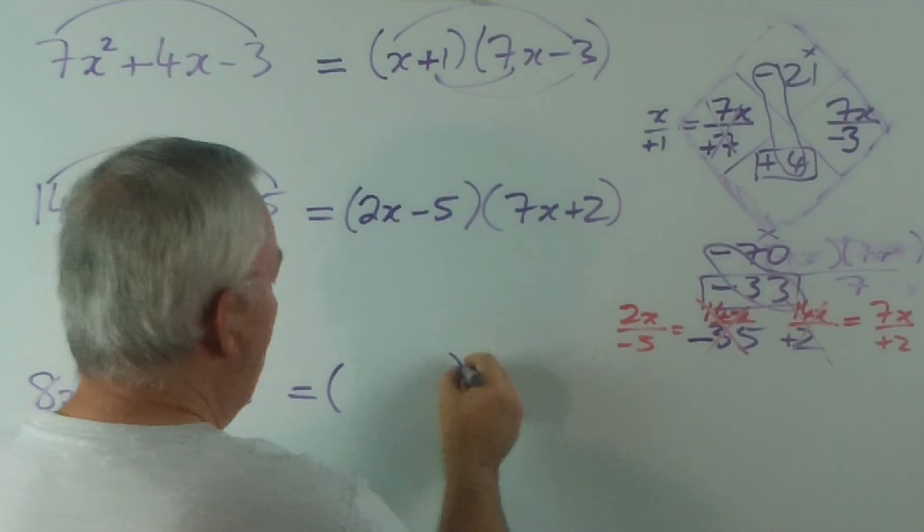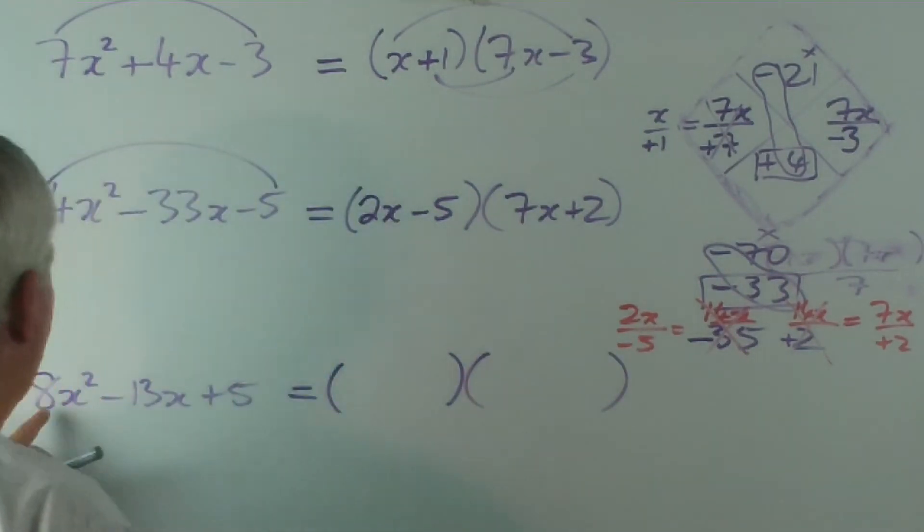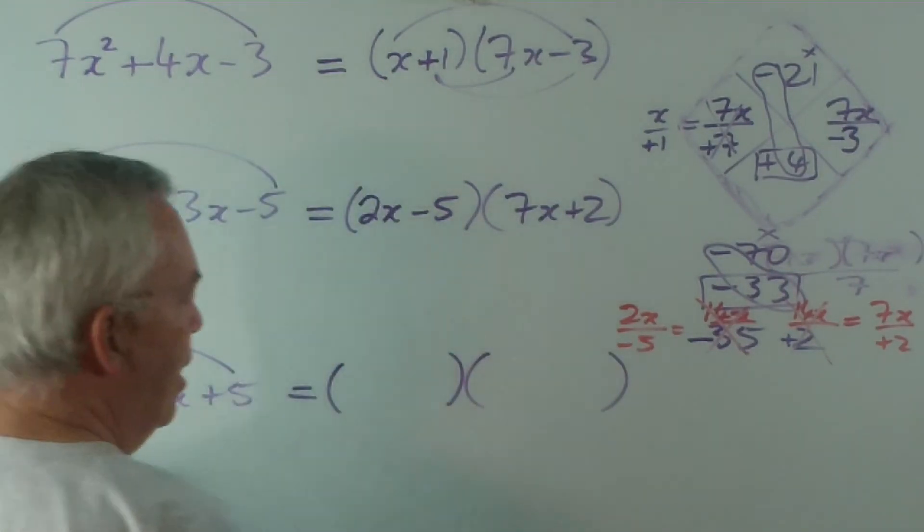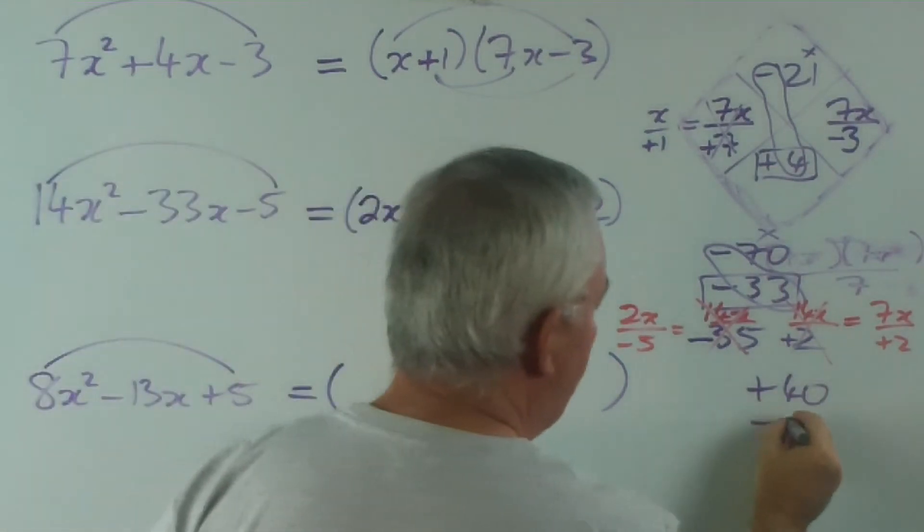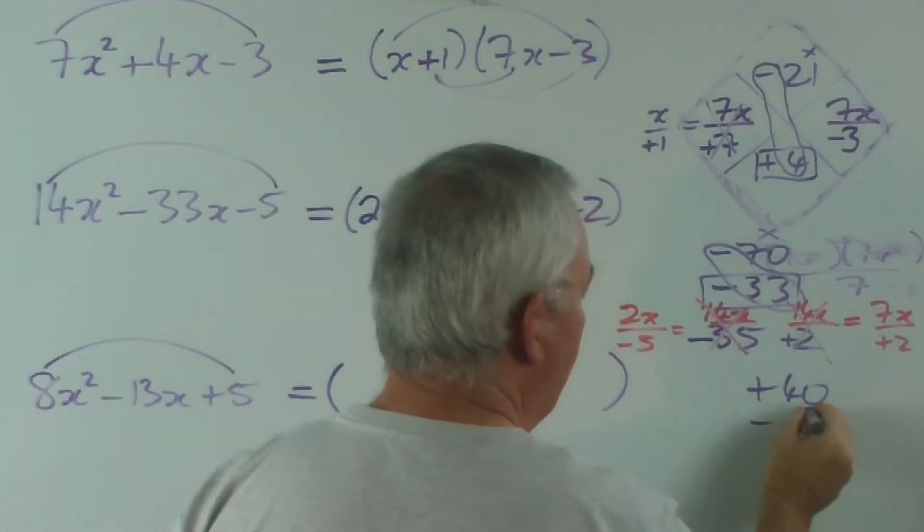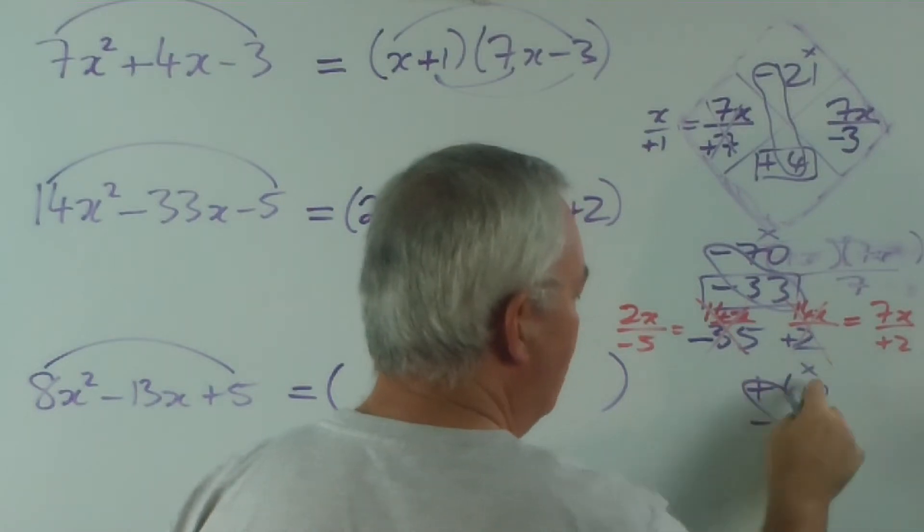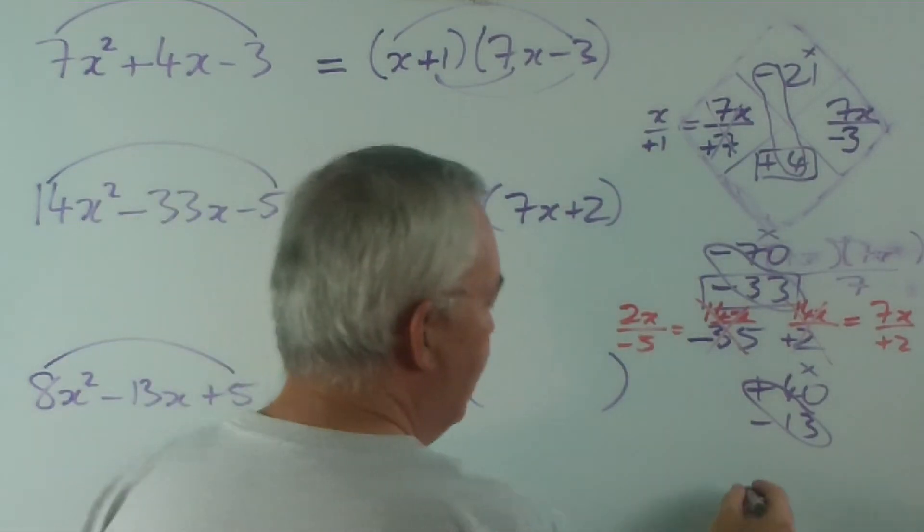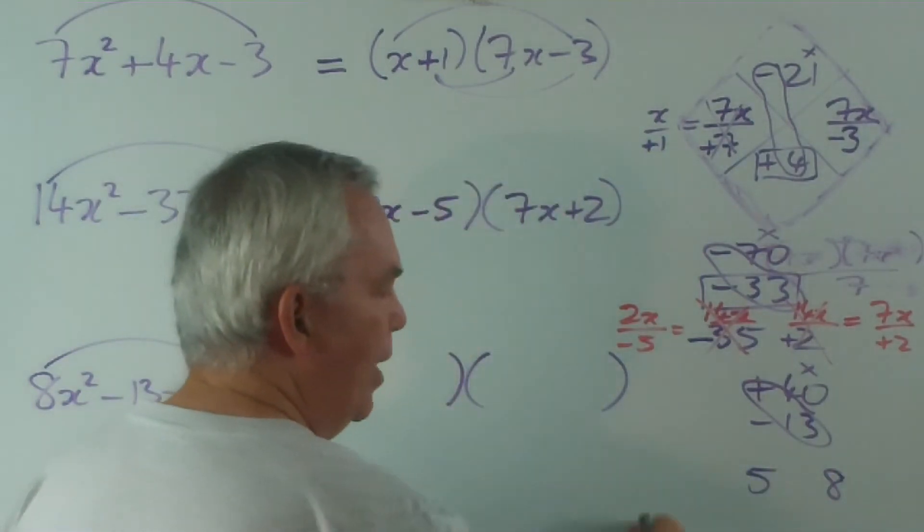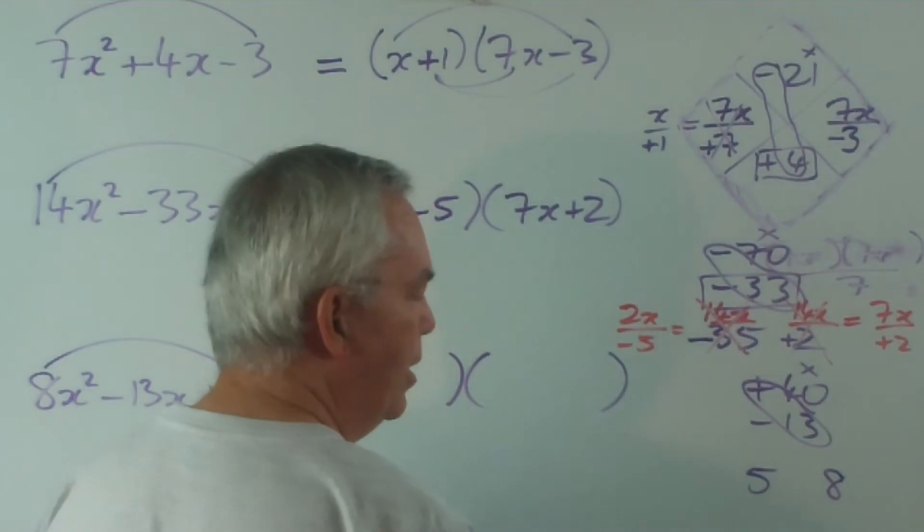Let's do this a little bit more quickly. 8×5 is +40, -13. And I'm after 2 numbers that multiply by 840 and add up to 13. Now this happens to be 5 and 8. 5 8s are 40 and 5+8 is 13.